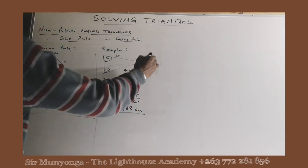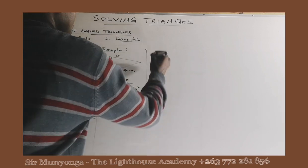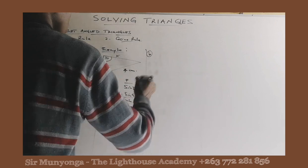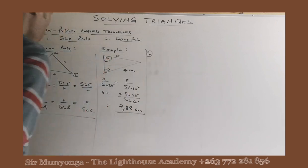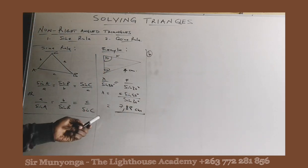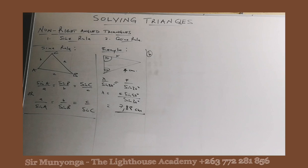That's example 1. Now for example 2, we are required to find the missing side. But how about when we are required to find the missing angle?